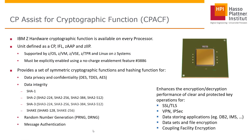The CP Assist for Cryptographic Functions is available on the single chip module — already installed on each and every processor. The processing unit can be defined as a central processor, an Integrated Facility for Linux, or as a zIIP — the System z Integrated Information Processor — which is important today.